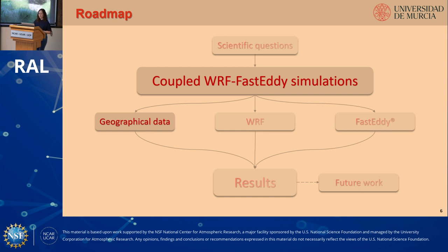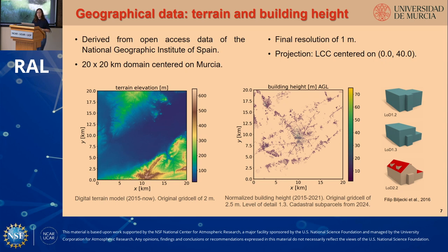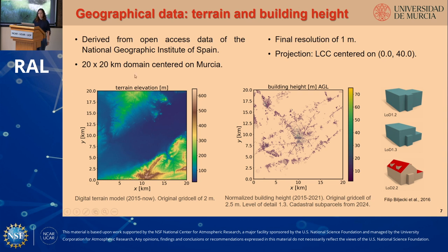All the geographical data used in this study was derived from open-access data of the National Geographic Institute of Spain. We've designed a 20 by 20 kilometer domain centered on the city of Murcia at a final resolution of one meter, using a Lambert conformal conic projection centered on zero degrees longitude and 40 degrees latitude. The terrain elevation had an original grid cell of two meters, while the building heights had an original grid cell of two and a half meters, prepared to level of detail 1.3, meaning building surfaces are flat but different parts can have different heights.